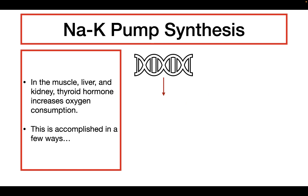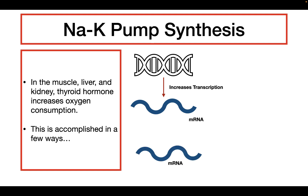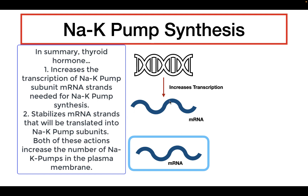Thyroid hormone can increase the transcription of specific genes needed to put together the sodium-potassium pump. So it increases the transcription of the mRNA needed to form the different subunits that make up the sodium-potassium pump. In addition, thyroid hormone can also stabilize mRNA, so when it stabilizes the mRNA of these specific subunits, it also increases the translation of this mRNA. So both by increasing transcription and by stabilizing mRNA, thyroid hormone increases the number of sodium-potassium pumps in the cell membrane.